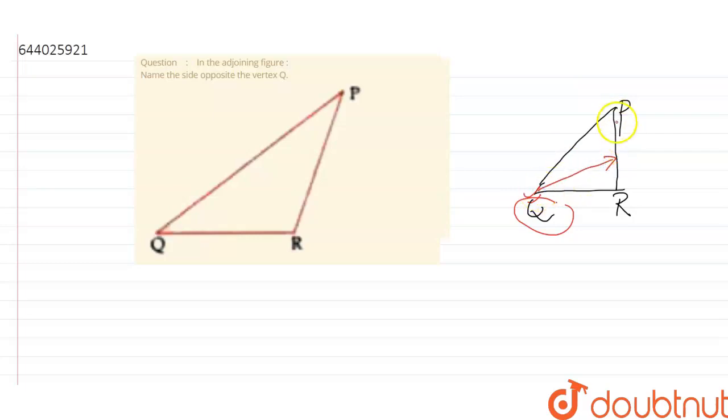So, this is the side opposite to vertex Q is PR. So, the answer is PR, this side.